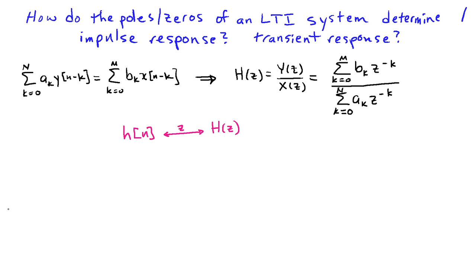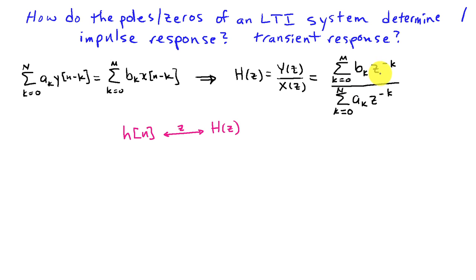We know that if we have a linear time-invariant system described by a constant coefficient difference equation, the system function H(z), which is Y(z) divided by X(z), can be expressed in terms of the coefficients of the difference equation as a rational function, where in the numerator we have the sum from k equals 0 to m of b_k z^{-k}, and in the denominator we have the sum from k equals 0 to n of a_k z^{-k}. We also know that the impulse response is the inverse z-transform of the system function.